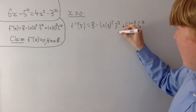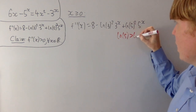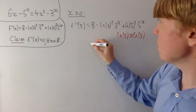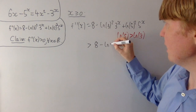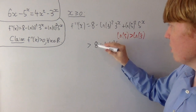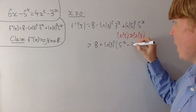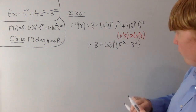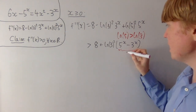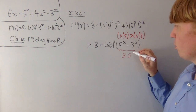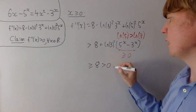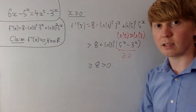Starting with the ln(5) term: we know ln(5) is greater than ln(3), so we can replace ln(5) with ln(3) and take out a factor. This tells us the second derivative is greater than 8 minus ln(3) squared times 3 to the x, plus ln(3) squared times 5 to the x, which equals 8 plus ln(3) squared times (5 to the x minus 3 to the x). When x is greater than or equal to zero, 5 to the x is certainly greater than or equal to 3 to the x, so this term is at least zero. So all of this is greater than or equal to 8, which is certainly greater than zero.